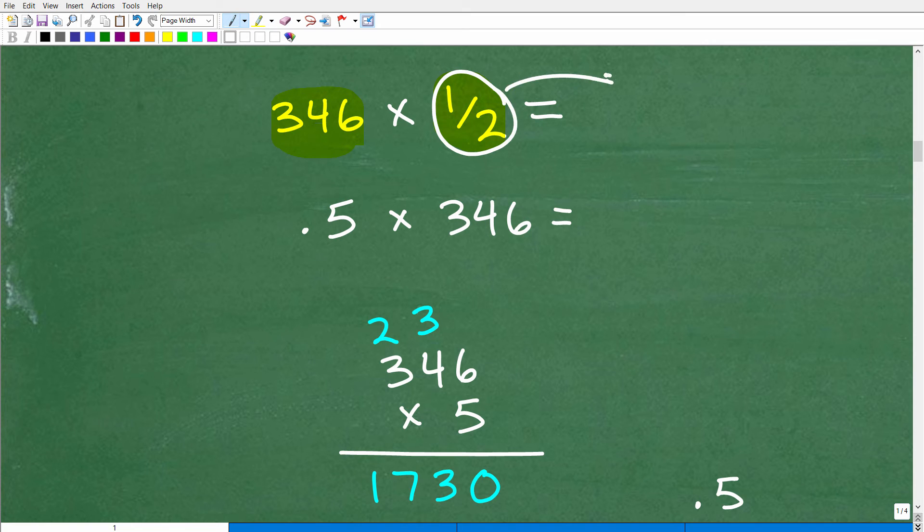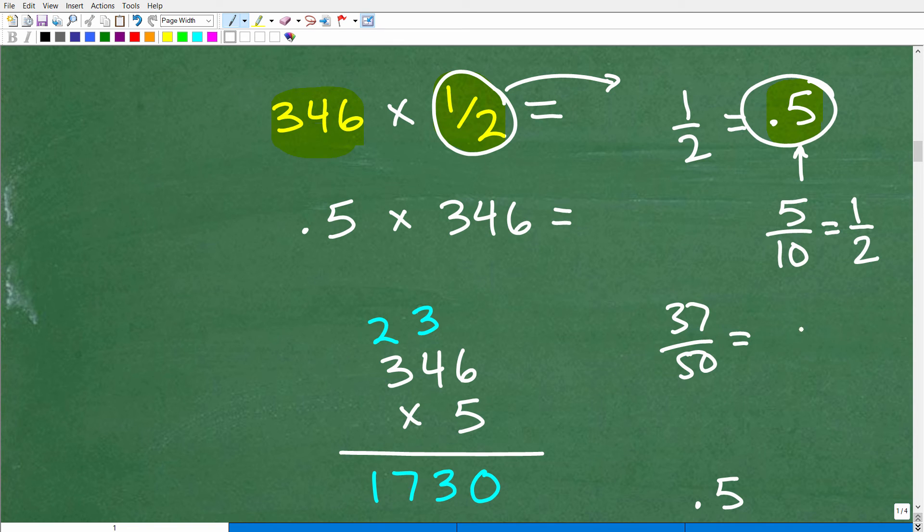Well, I can write this fraction as a decimal. Now, hopefully you recognize the fraction 1 half as being equivalent to the decimal 0.5, right? How do we say this right here with place value? This is called right here 5 tenths, right? So 5 tenths. So this could be reduced down to 1 half. So the fraction 1 half is equivalent to the decimal 0.5. Now, one way you can convert fractions into decimals is divide the numerator by the denominator.